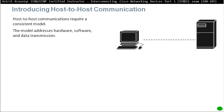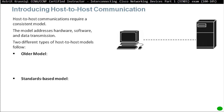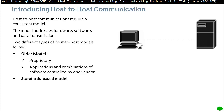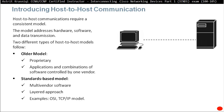Host-to-host communication requires a consistent model. This model addresses hardware, software, and data transmission. There are two different types of host models: older models and standard-based models. Older models used to be proprietary — one company owned the hardware and software, so if you needed host-to-host communication you had to purchase everything from that single company. These days we have an open standard TCP/IP model, which is a multi-vendor software layered approach.